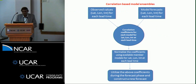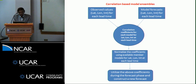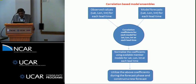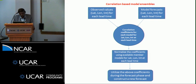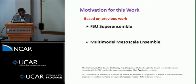The correlation-based model ensemble is another approach put together in our lab recently, tested in weather and climate, and is very robust. If you have the observed values of latitude, longitude, and intensity for each lead time, and the model-based forecast for the same, you calculate the correlations of these, normalize them — an elaborate procedure — and then utilize these coefficients for the construction of the correlation-based model ensemble. We found this to be quite a powerful scheme, except for the limitations of small sample size.